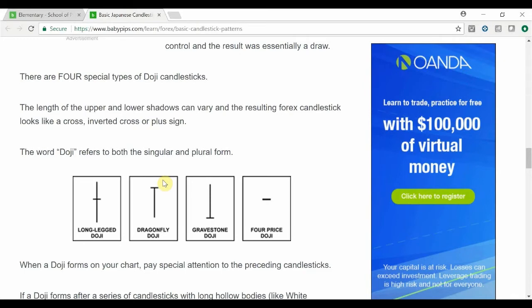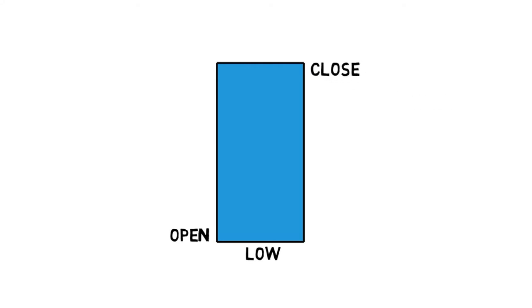Let's now crack on with the videos. Marubozu is the exact opposite candlestick to Doji. As the Doji represents indecision in the market, Marubozu shows total conviction about the price direction. Bullish Marubozu open price is also the session's low and closing price is equal to the session's high. This candlestick has no shadows at all, showing that buyers were in control for the whole time of the session. Let's take a look at how Bullish Marubozu forms.